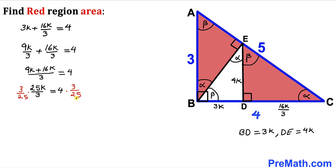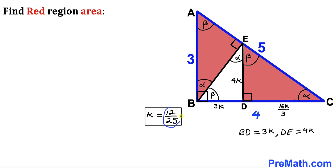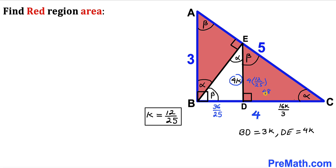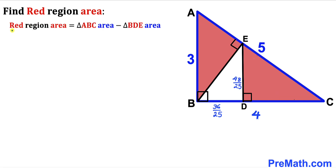After simplification, the 25s cancel and the 3s cancel, so our K value turns out to be 12/25. Since K equals 12/25, side BD is 3 times 12/25, giving us 36/25. Likewise, side DE is 4 times 12/25, giving us 48/25.